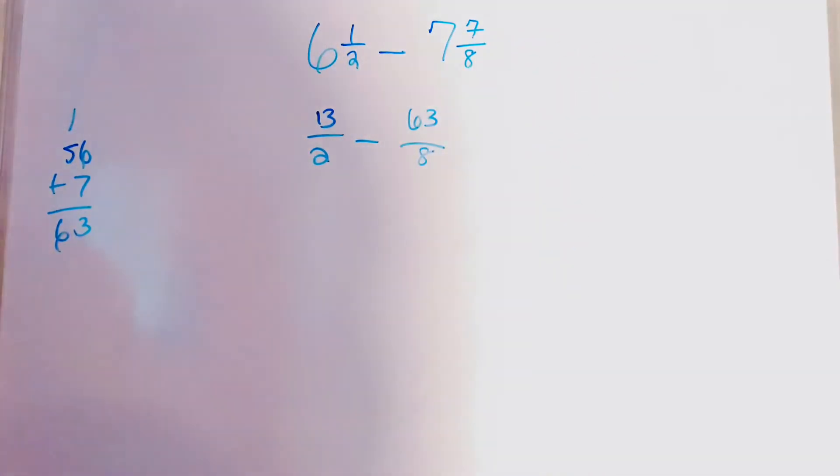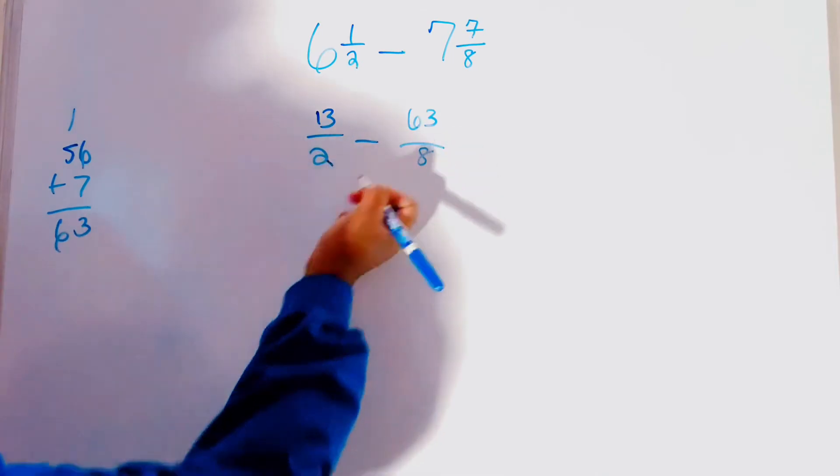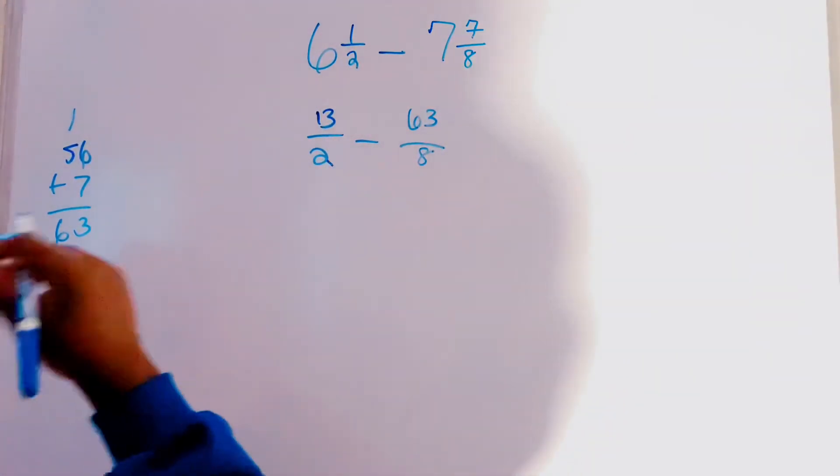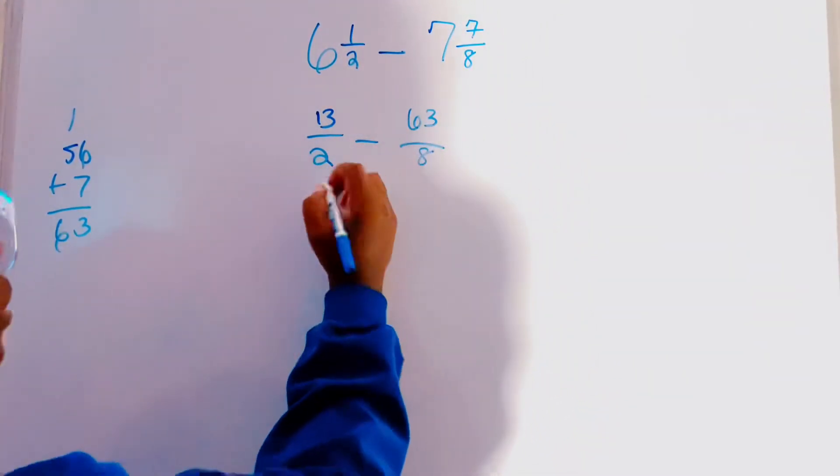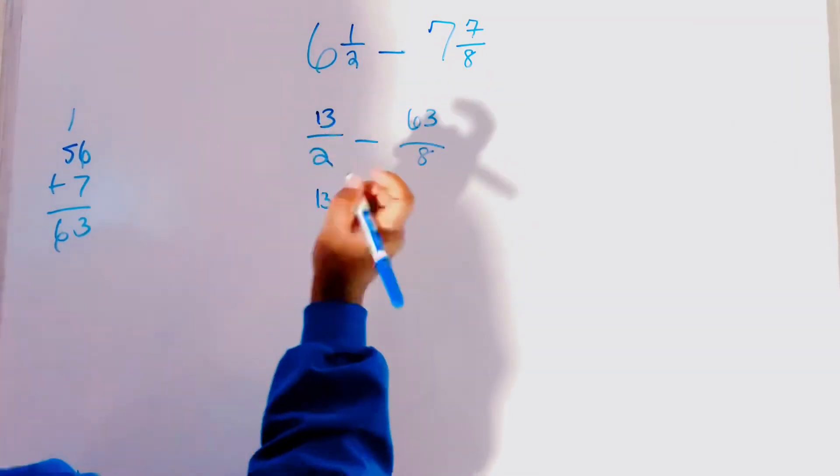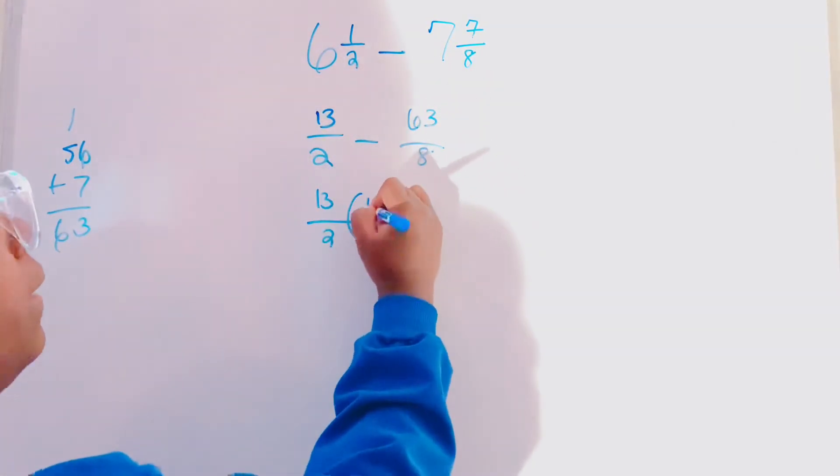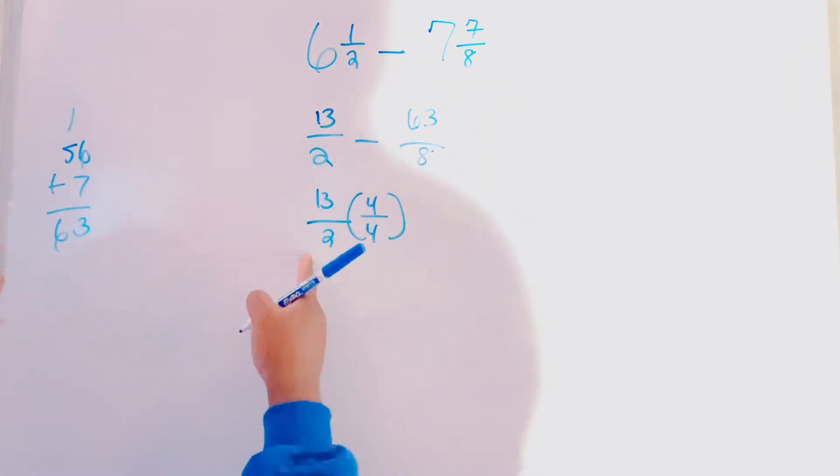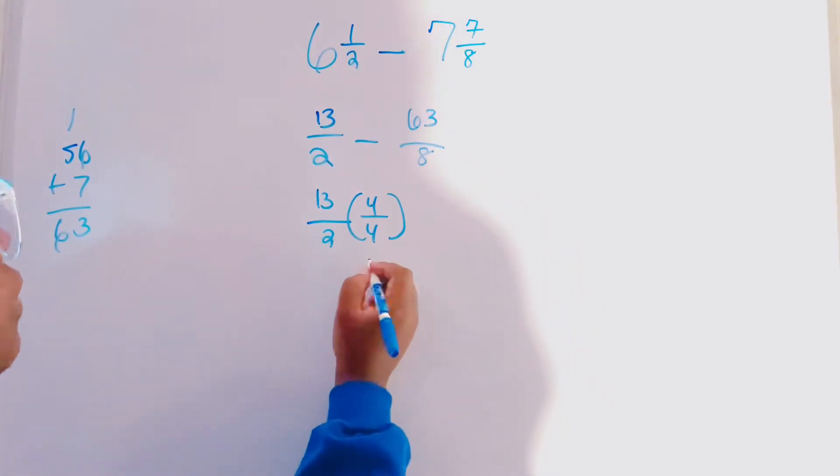And can we solve this problem? No, we cannot. Because our denominators are not the same. So, let's go ahead and change our denominators for this particular problem right here. And we multiply that by 4 to get the 8 in the denominator section.